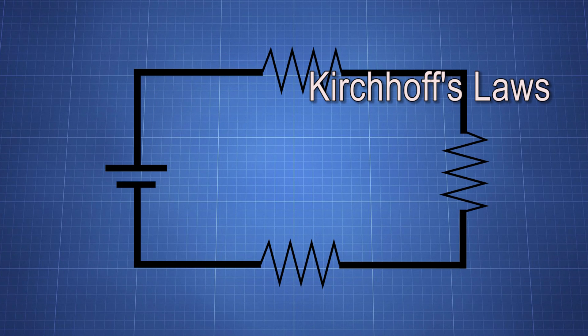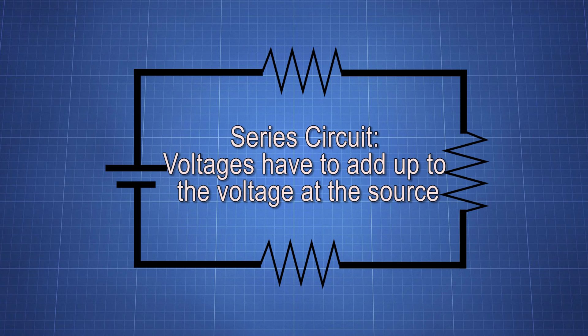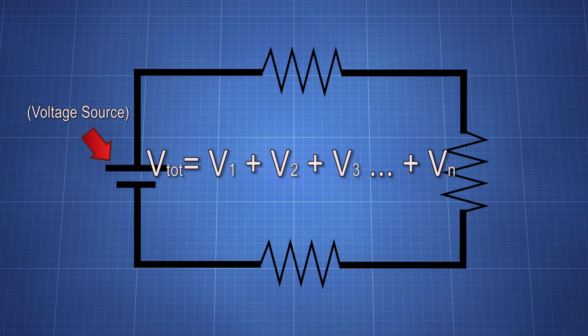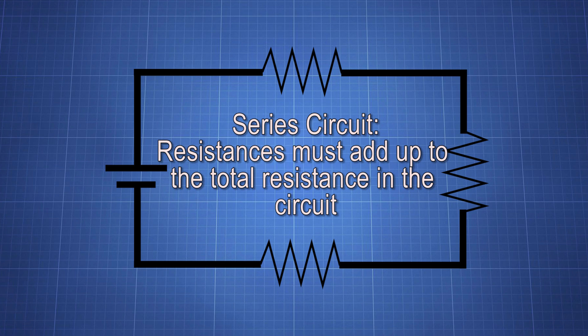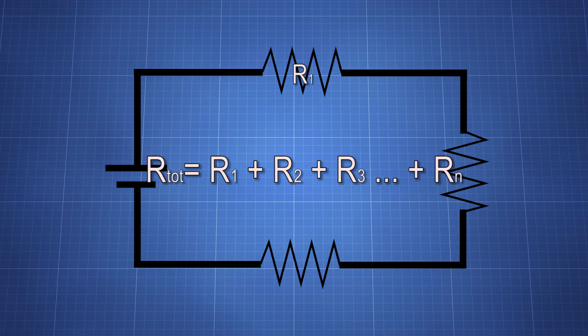In a series circuit, the voltage at each resistor has to add up to the voltage at the source. V total is equal to V1 plus V2 plus V3 plus however many other Vs we have. The same applies to resistance. You just add them up. The resistance total is equal to R1 plus R2 plus R3 plus however many are there are left.